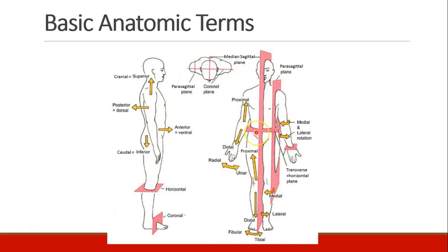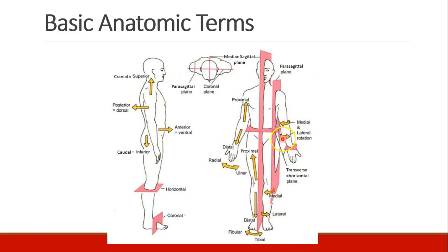Transverse planes are commonly seen in a CT scan and in many MRIs, although now we have computer algorithms that will let us see many different planes during imaging. Proximal means close to the center of the body and distal means away from the center of the body. We have proximal in the arms as well as in the legs. Medial means towards the middle and lateral means away from the middle. We can also rotate things medially towards the middle and laterally away from the middle.